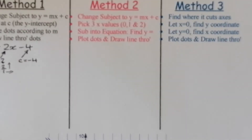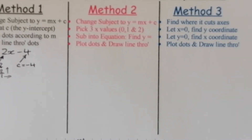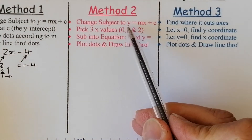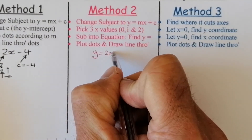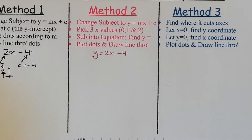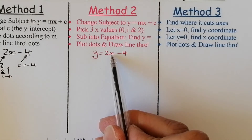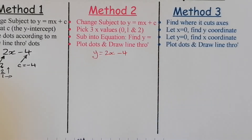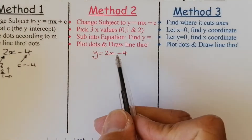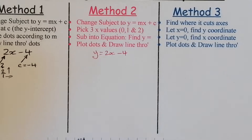Now let's look at Method 2. For this method, we make sure the equation is in y equals mx plus c form — here it was y equals 2x minus 4. We pick three x-values and substitute them into the equation to find the corresponding y-values. We can write this as a small table, then plot those points and draw the line through them.